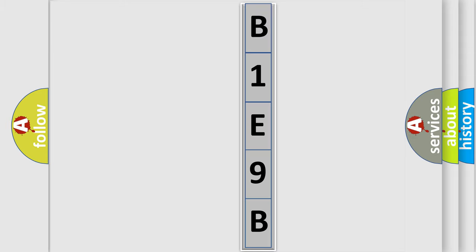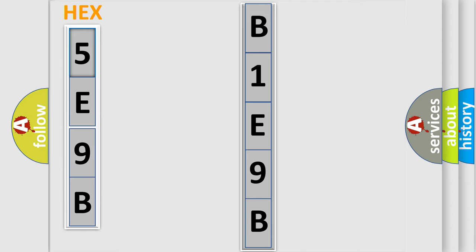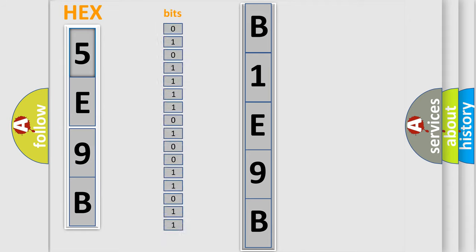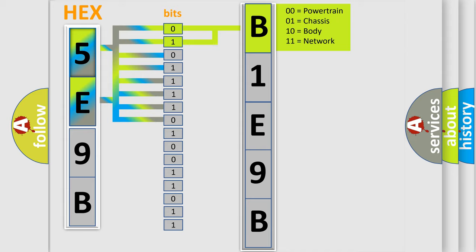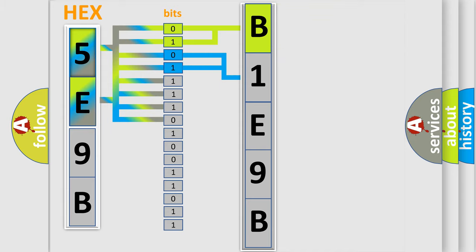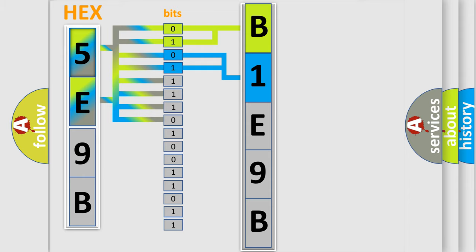The error code is split into two bytes consisting of 16 bits. One bit is the basic unit that each computer works with. The bit has two logical states: zero, low level, and one, high level. By combining the first two bits, the basic character of the error code is expressed. The next two bits determine the second character. The last bits of the first byte define the third character of the code.